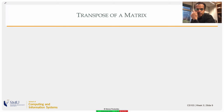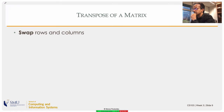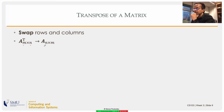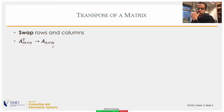Let's start with the transpose. Transpose is a fairly easy concept — what you're doing is just swapping rows and columns. If you have a matrix of m rows and n columns and you transpose it, you get n rows and m columns, because whatever columns you had in A will become rows in A transpose, and whatever rows you had in A will become columns in A transpose.